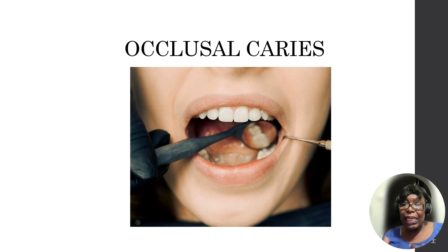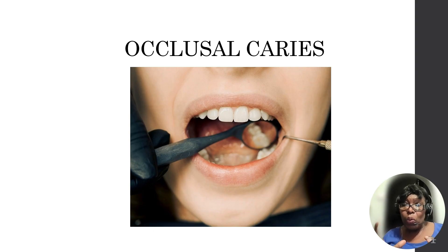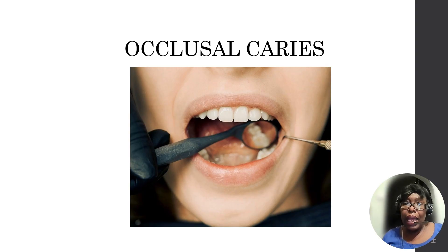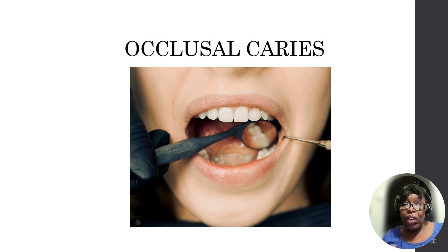When decay is about to start, it begins like a white patch — it's opaque and it doesn't look shiny. That is the early sign: when you see a white spot lesion. There are times you have stains, but the only way to tell whether there's a cavity is when you go to the dentist. If you ignore the white lesion, which is the early sign, it will progress.